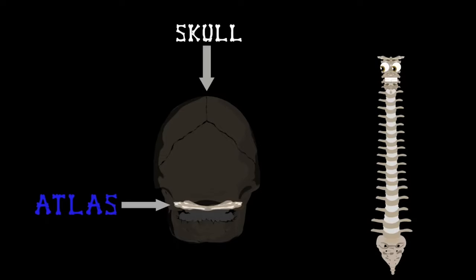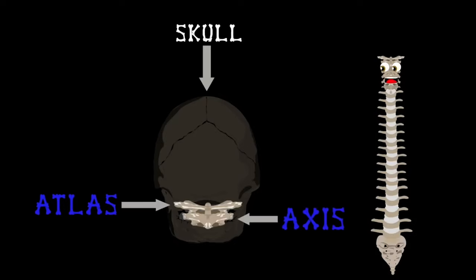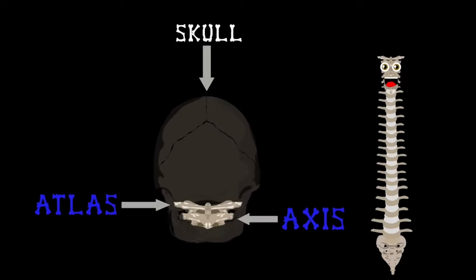The C2 axis allows your C1 and your skull to move about in most directions. Without it, life would be dull. C3 through C7 are there to support your head.